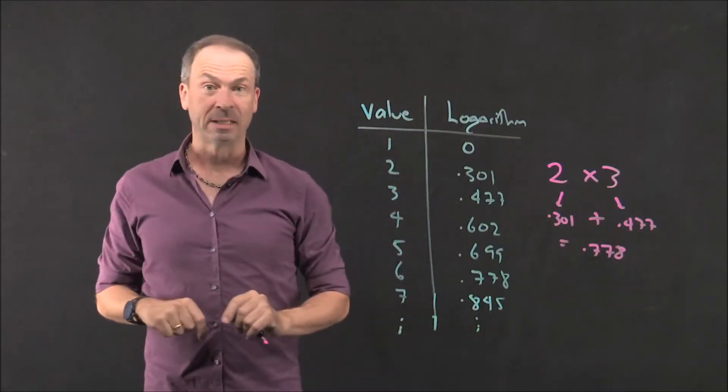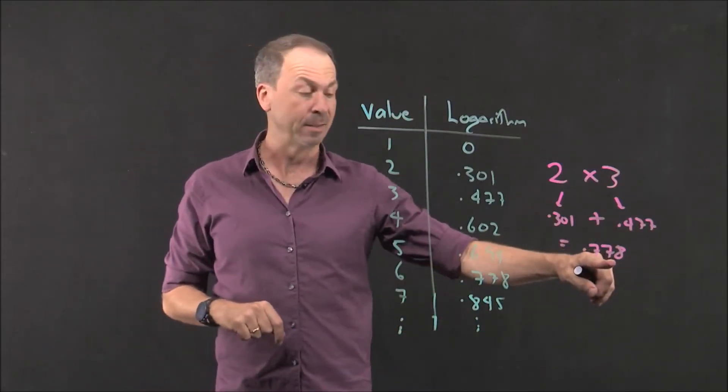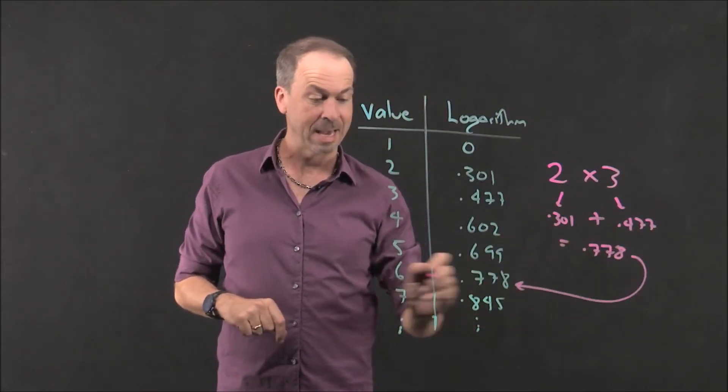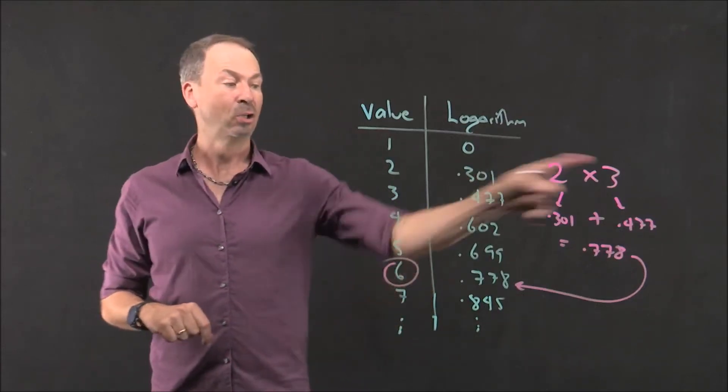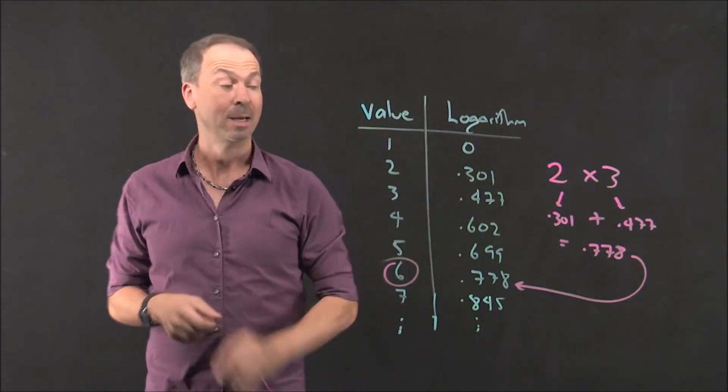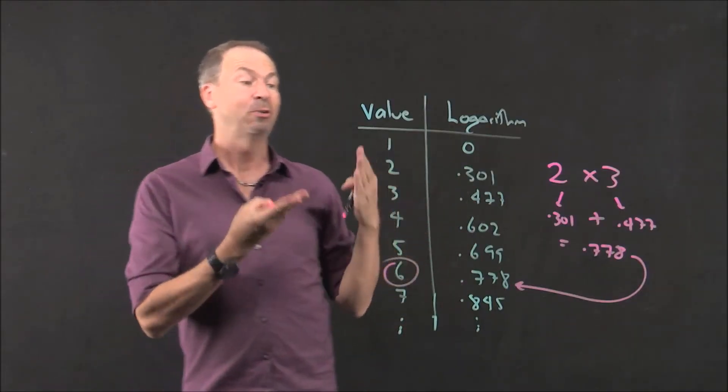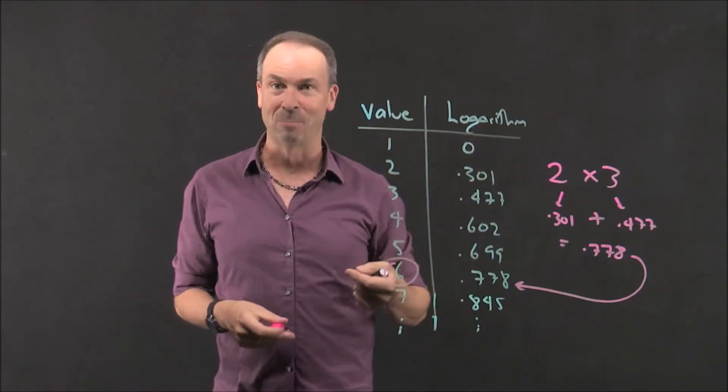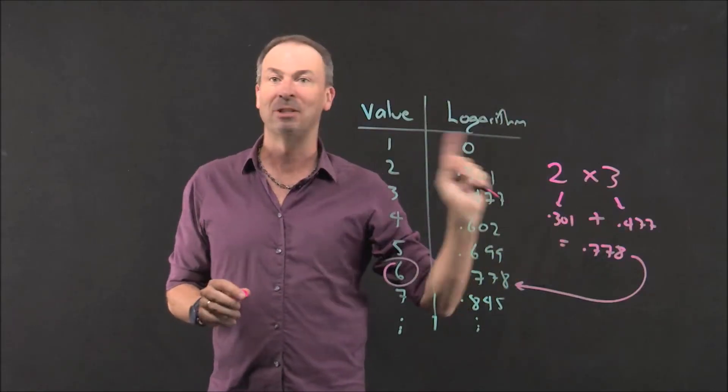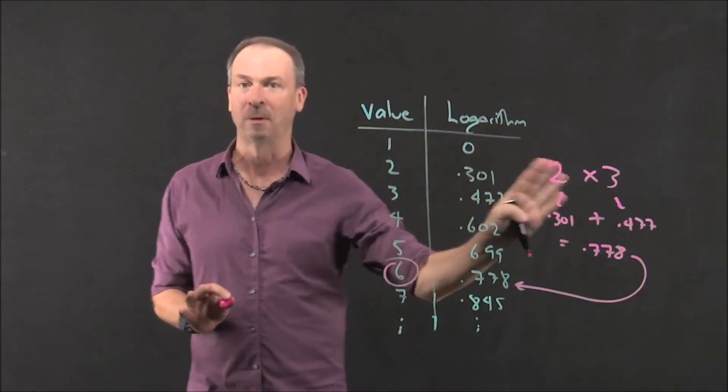Great. And now go back to the log table and see where 0.778 is on the table. And it's there. The answer is six. Two times three must be six. So without needing to understand Napier's approach to logarithms, you can just use these tables and actually do all that complicated multiplication by turning them into addition problems just like this. This essentially is what a log table does.